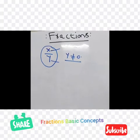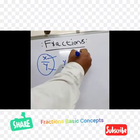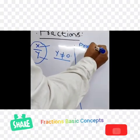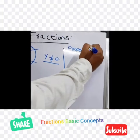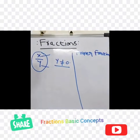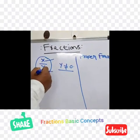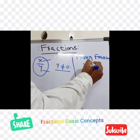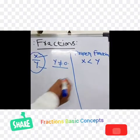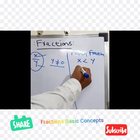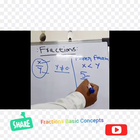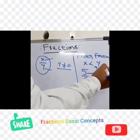There are various types of fractions. First, we will discuss proper fractions. In a proper fraction, the numerator is always less than the denominator — that is the condition. For example, 5 by 6 is a proper fraction because the numerator is 5, and 5 is less than 6, so it satisfies the condition. Therefore, it is a proper fraction.